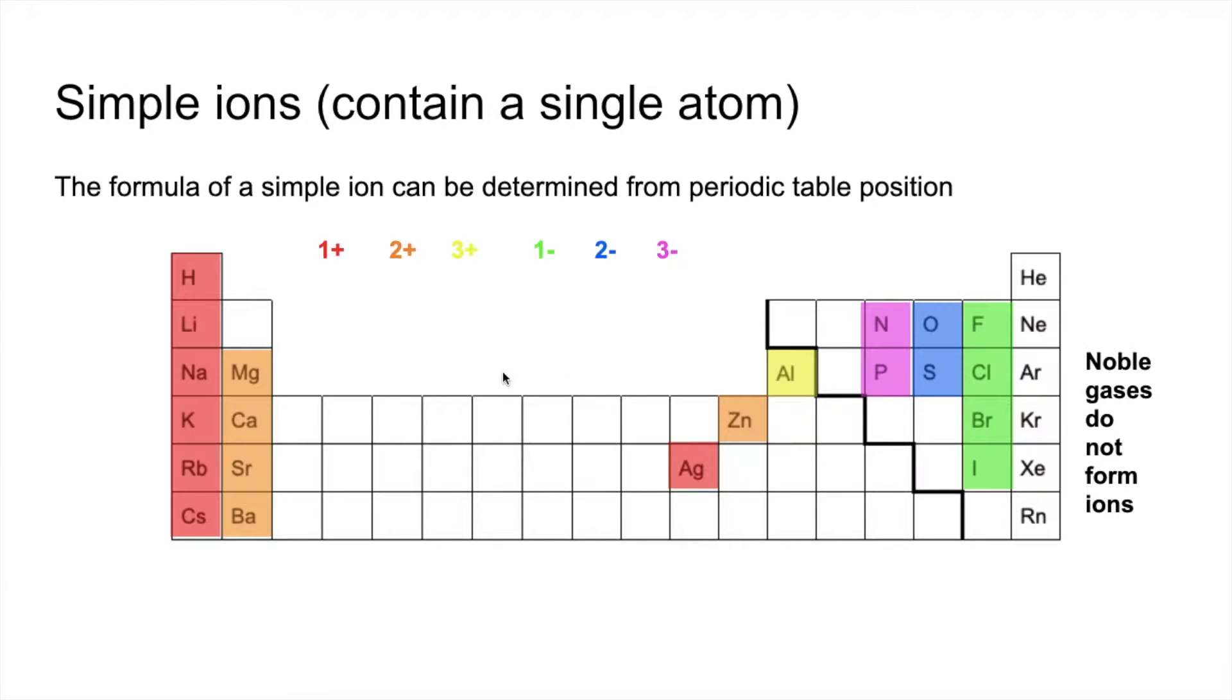We'll just finish this slide by talking about some transition elements. One of their properties is the fact that they can form ions with different charges. For example, iron and copper. We're going to look at those as our examples.